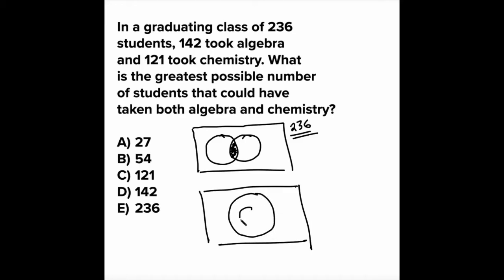The smaller circle is completely inside the bigger circle. Now, how many people are in this smaller circle? Well, they told us chemistry, right? It's the smaller one out of these two, 121 people. So the maximum number of people who could have taken both algebra and chemistry is 121.